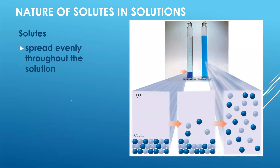When a solute is added to a solvent, it tends to spread out through diffusion. In this example, copper(II) sulfate is known for producing a blue solution because of the Cu²⁺ ion. It starts concentrated but spreads out to become an even, uniform color throughout — which is again why solutions are considered homogeneous mixtures.